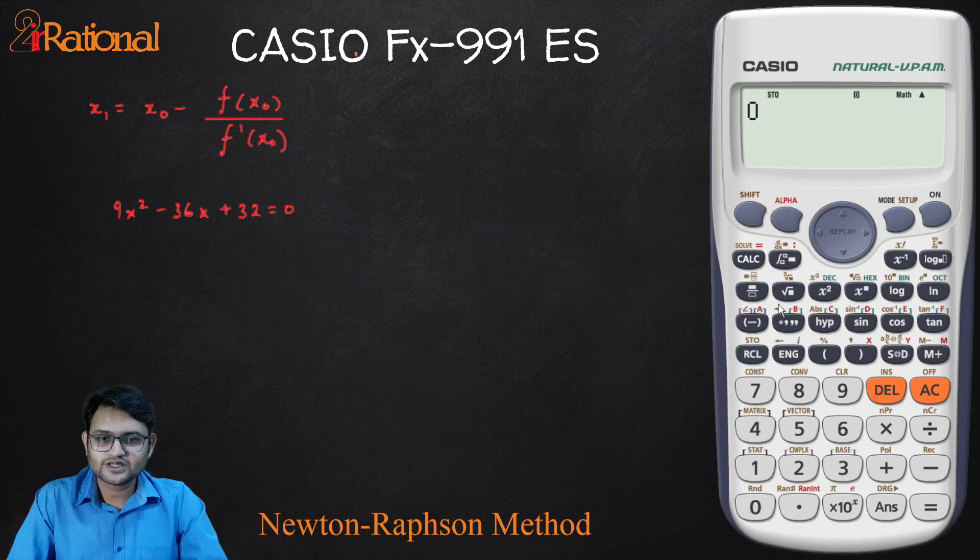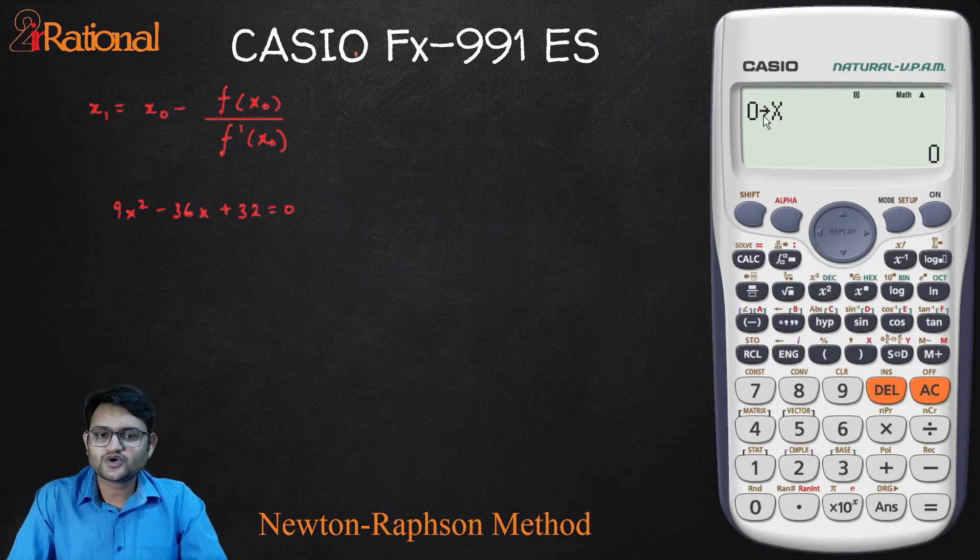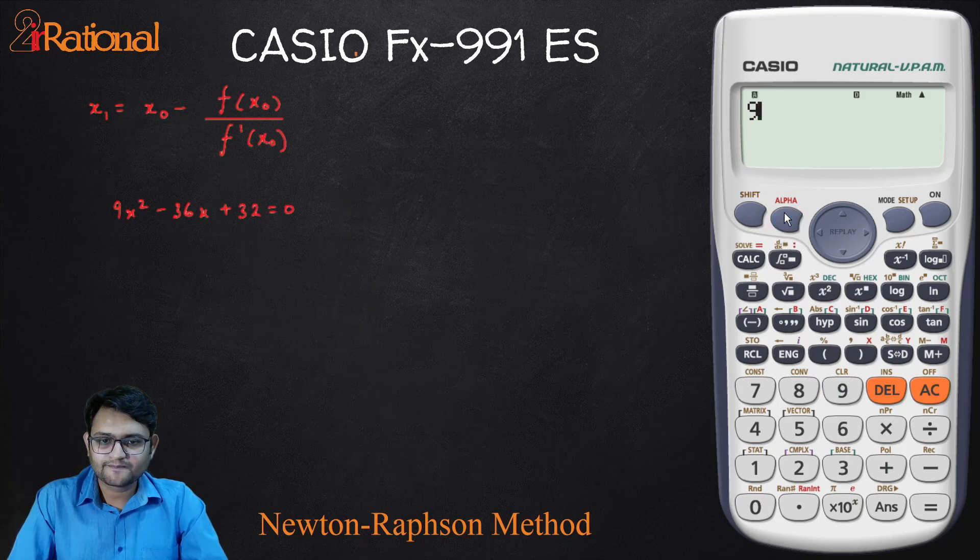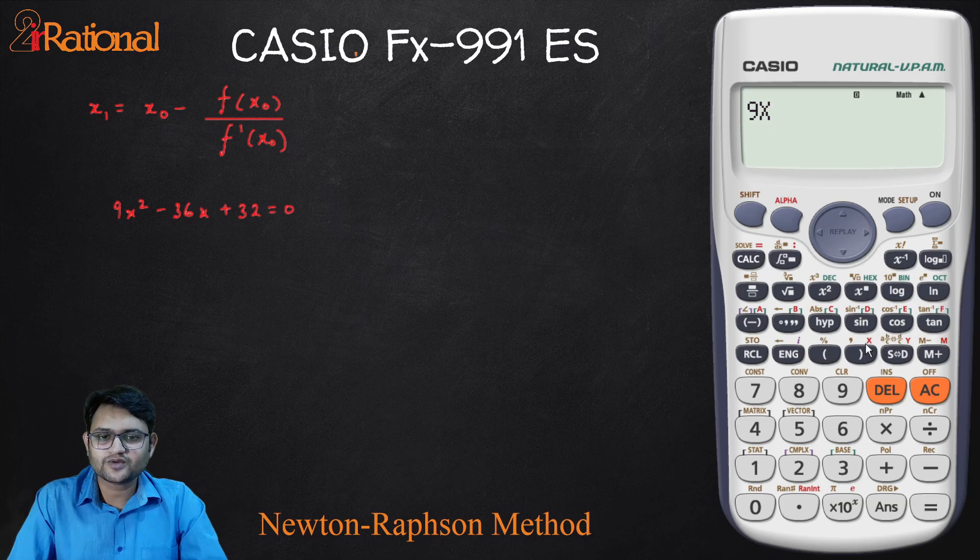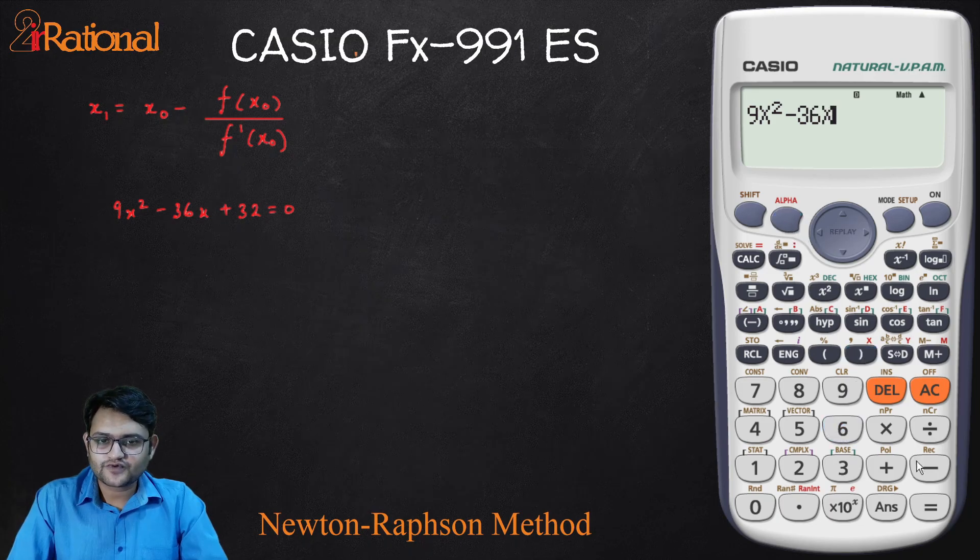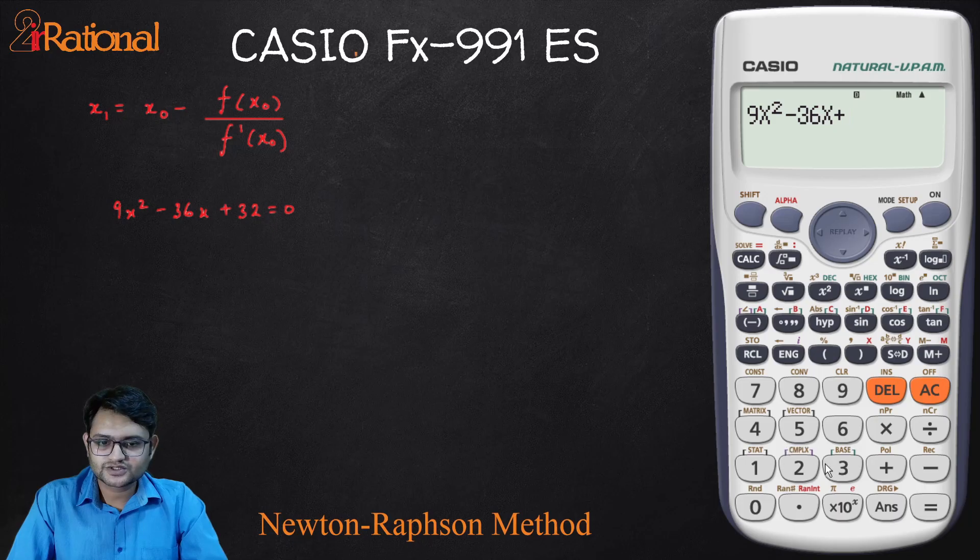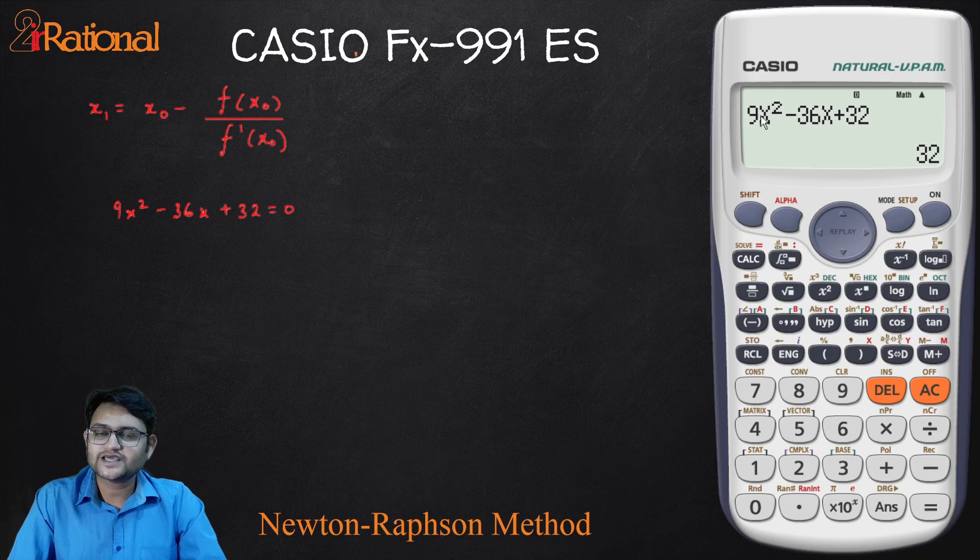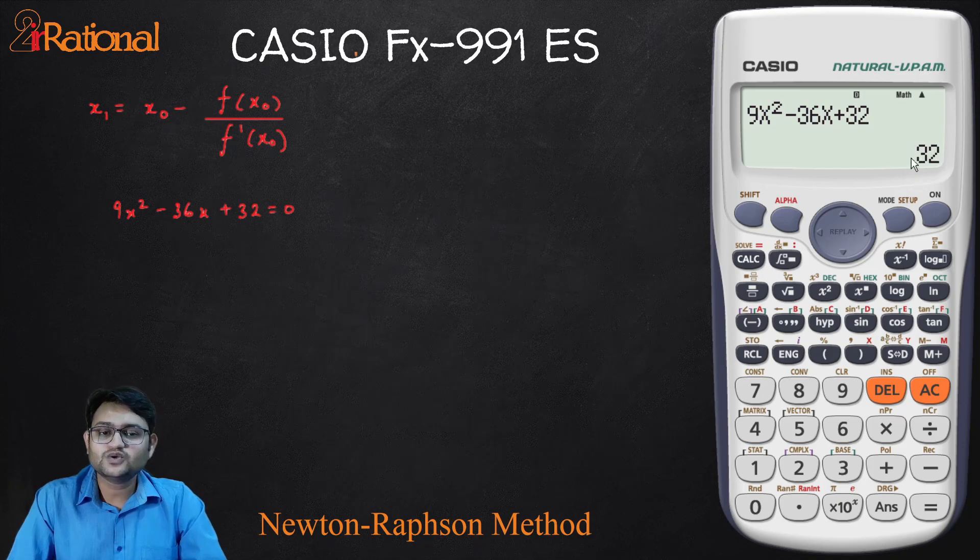It's 0 and I will store it in this value x. Shift RCL. You can see here I have STO and then I will press this bracket close. That gives me 0 has been now stored in x. Now I will make this specific equation in terms of this x. So I have 9 alpha and then when I press this close bracket button, I get an x. Then minus 36 alpha x plus 32. This is my equation. When I press equal to, it will substitute the value of x as 0 and give me the answer that is 32. This is a positive value. I don't care what value it is, but it is a positive value that is important for me.